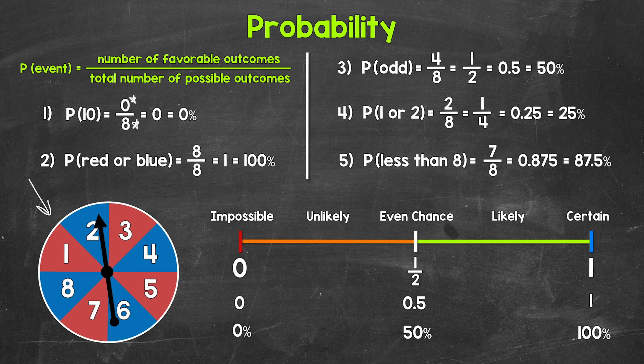Taking a look at this probability, there's no chance we land on a 10. Looking at the probability line down here, we can see it starts at zero and goes up to one. All probabilities will fall somewhere on this line, and we can see that we have one half in the middle. We can use fractions, decimals, or percents when working with the probability line. A probability of zero falls right here — I'll put a star and label it with a 10. When we have a probability of zero, we call that an impossible event. There's no way for it to happen. Spinning a 10 here is an impossible event — there's no 10 on the spinner, so we can't spin a 10.